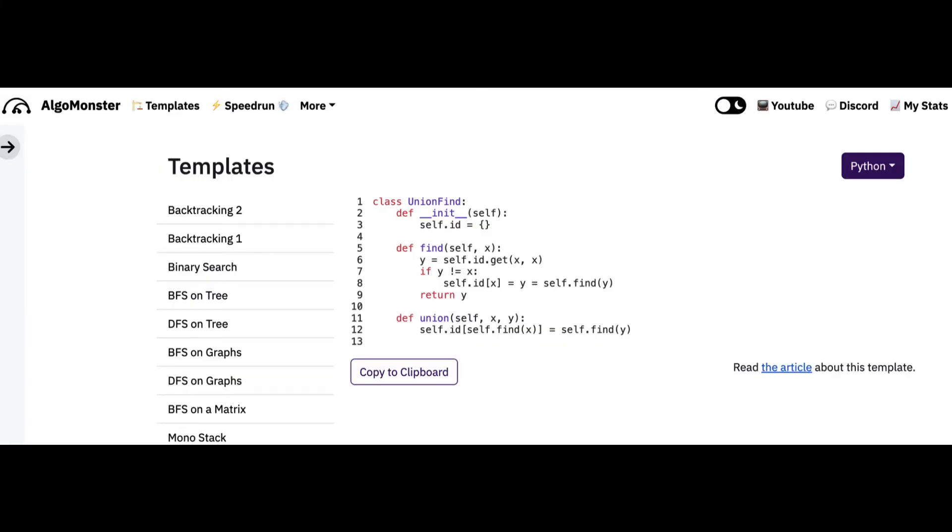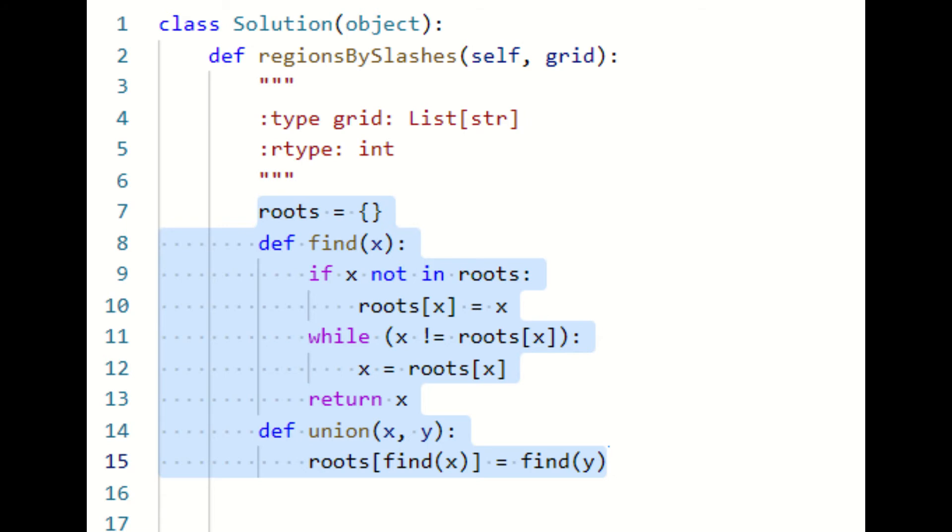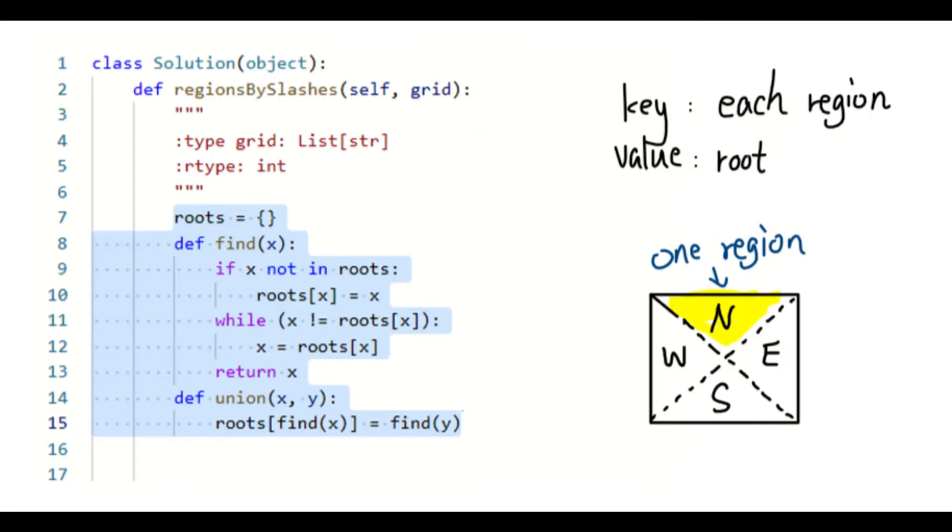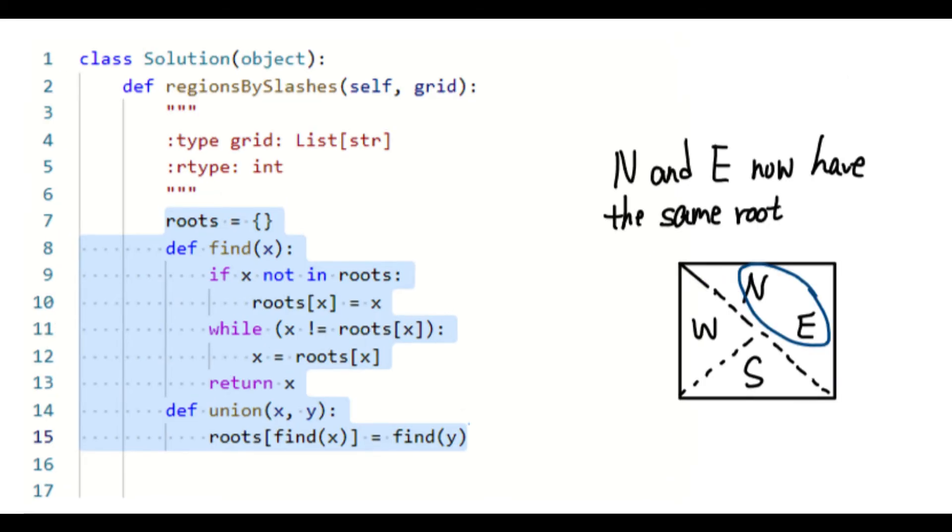There are many ways to implement UnionFind data structure, so you are free to choose any implementation that you feel comfortable with. In our code, we will store the roots of each region in a dictionary, where the keys are the regions and the values are their roots. Initially, each region is its own root. When two regions are union together, their roots become the same.